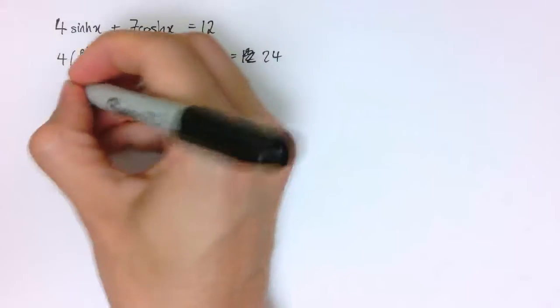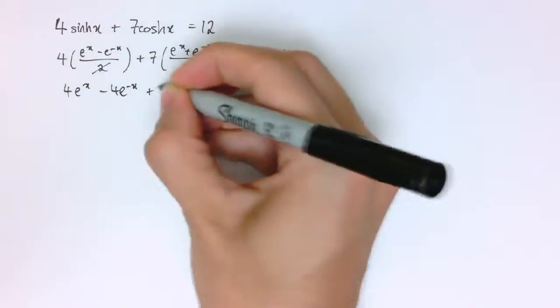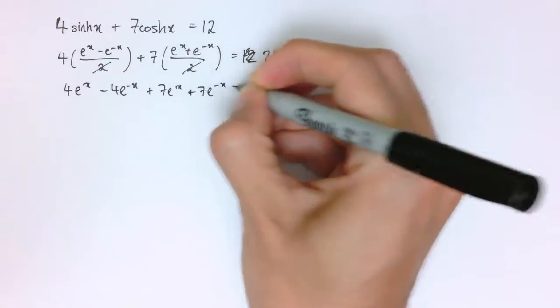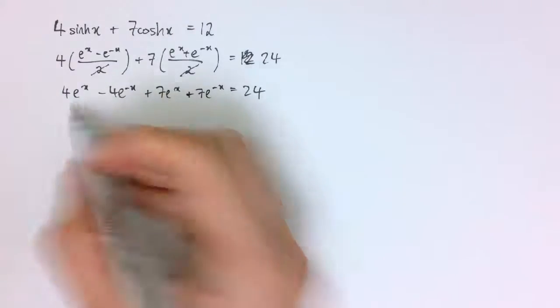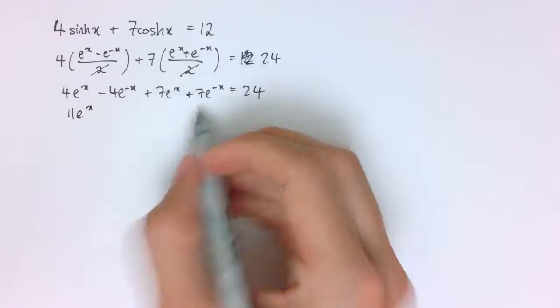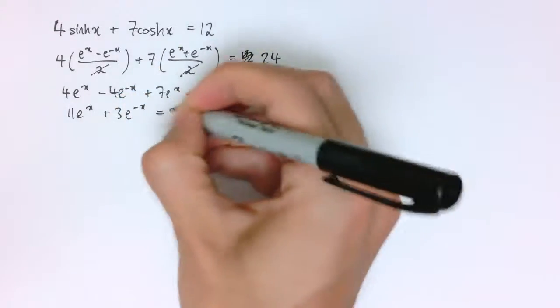It's a bit easier to work with and I multiply this out and I get 4e^x minus 4e^(-x) plus 7e^x plus 7e^(-x) equals 24. And combining the like terms here we've got 4 plus 7 is 11e^x, and minus 4 plus 7 gives us plus 3e^(-x) equals 24.